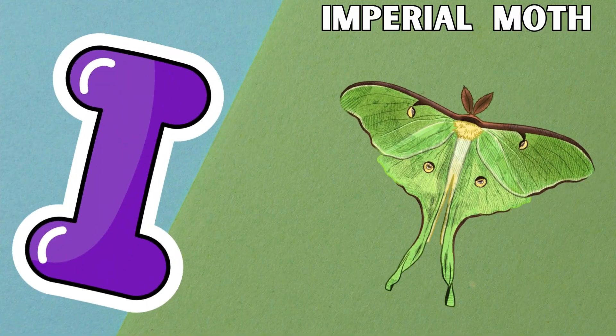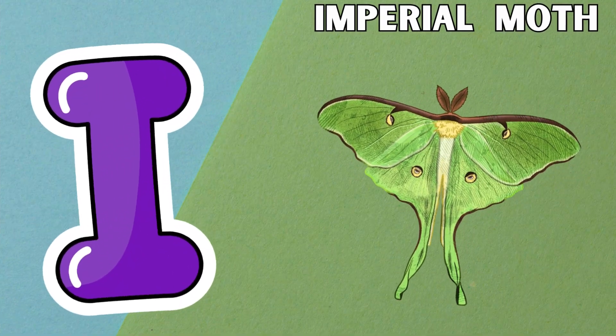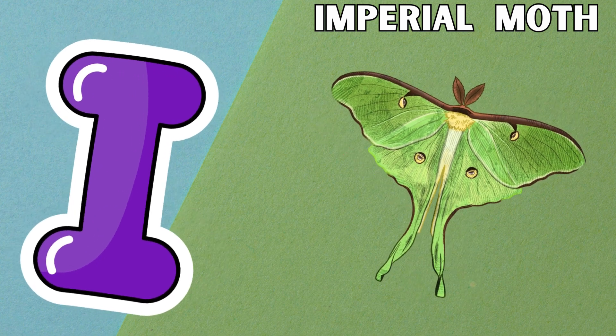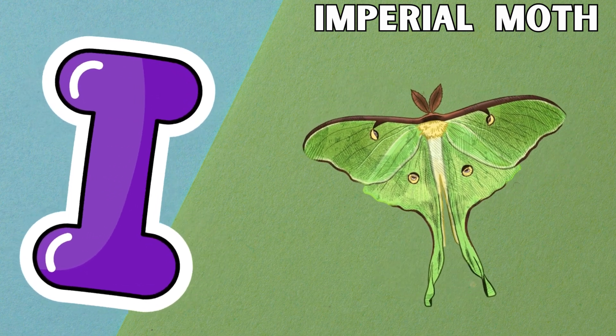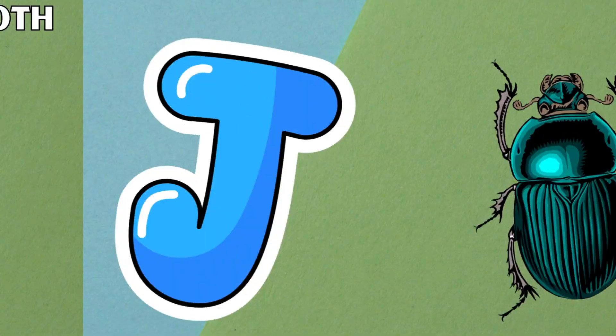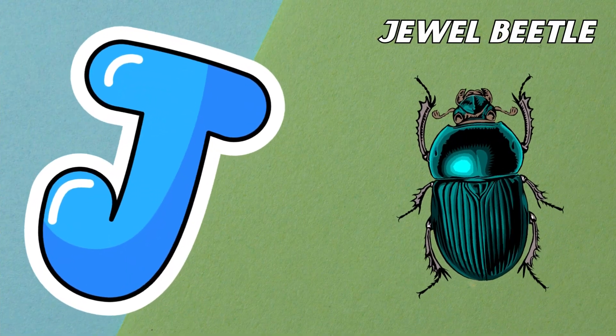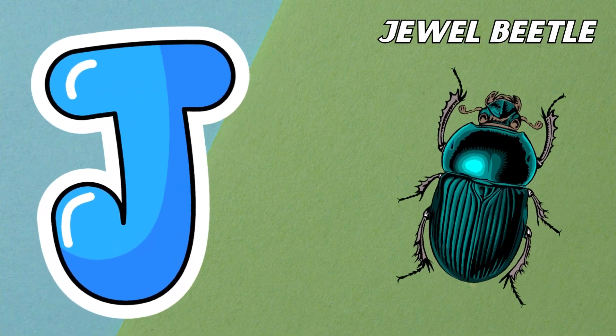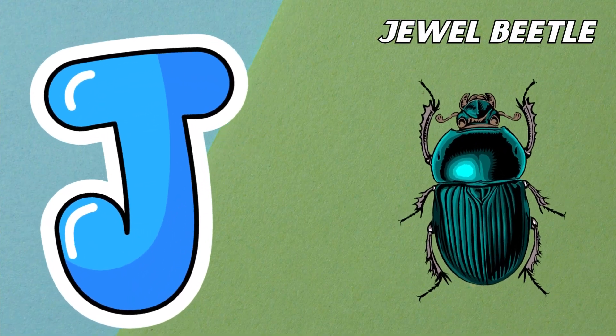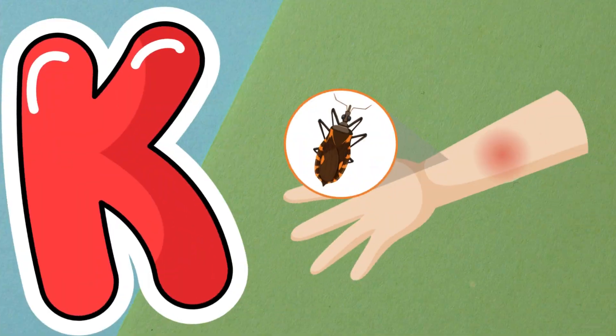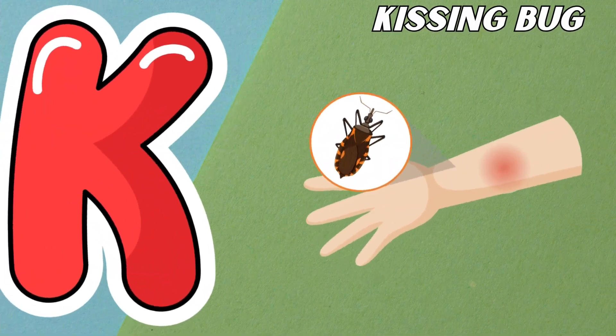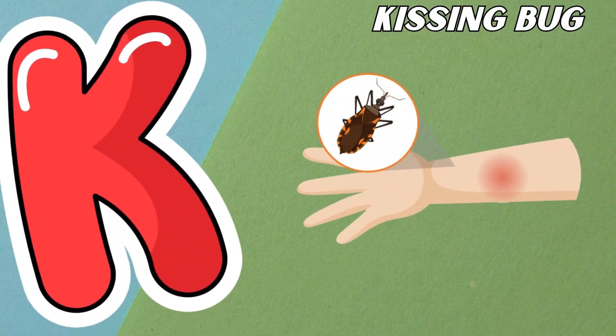I is for Imperial Moth. I, I. Imperial Moth. J is for Jewel Beetle. J, J. Jewel Beetle. K is for Kissing Bug.